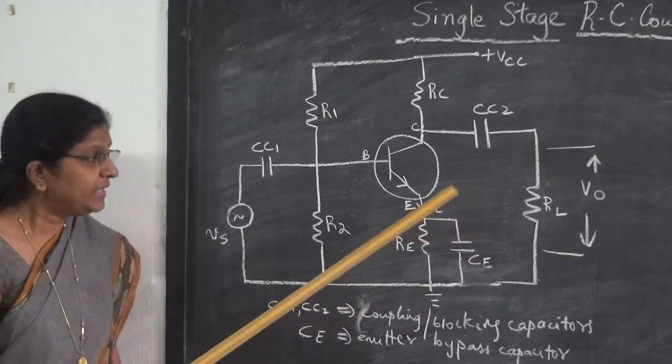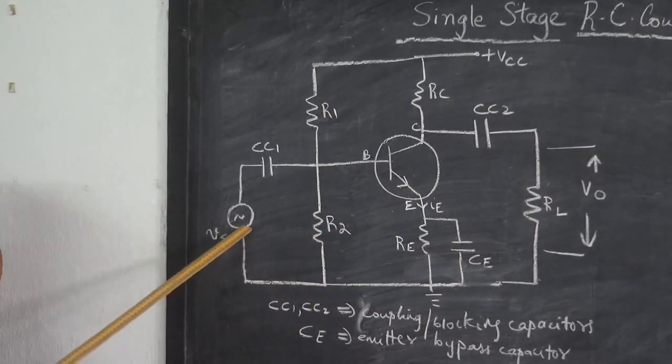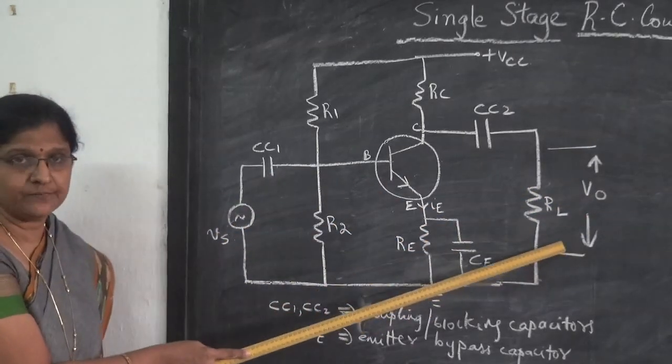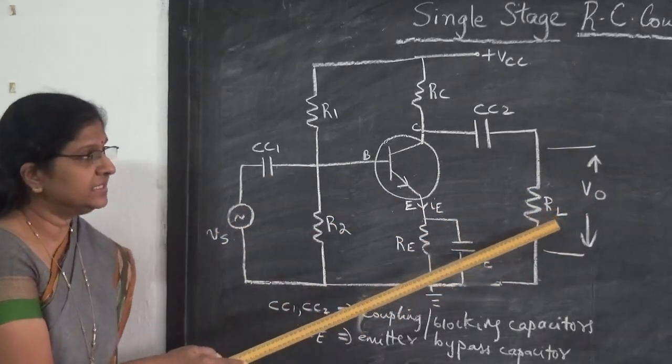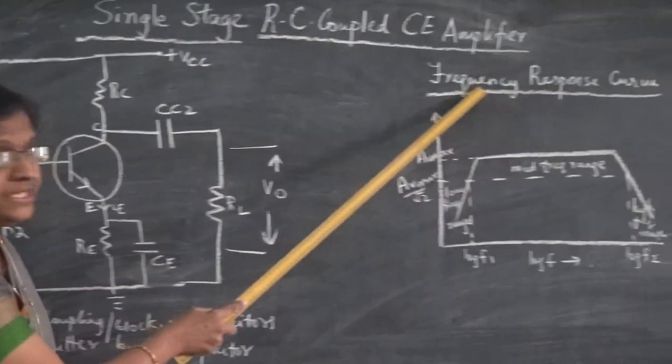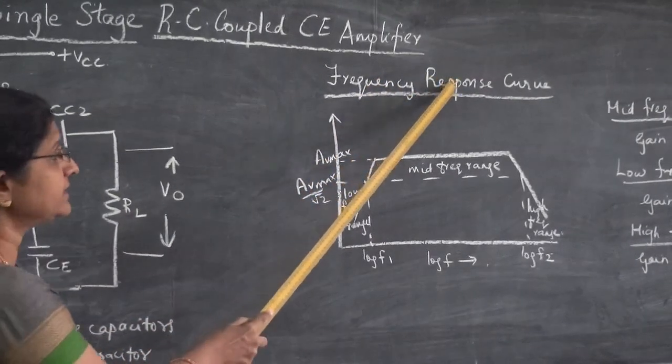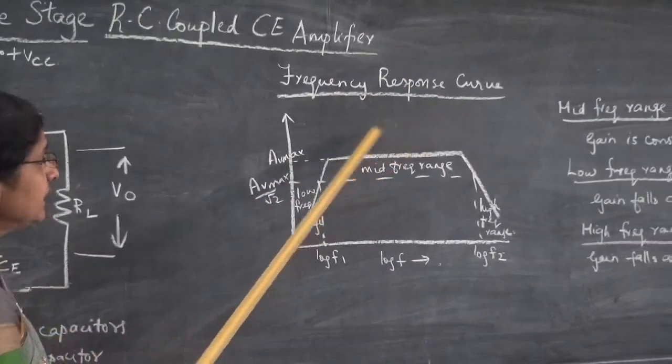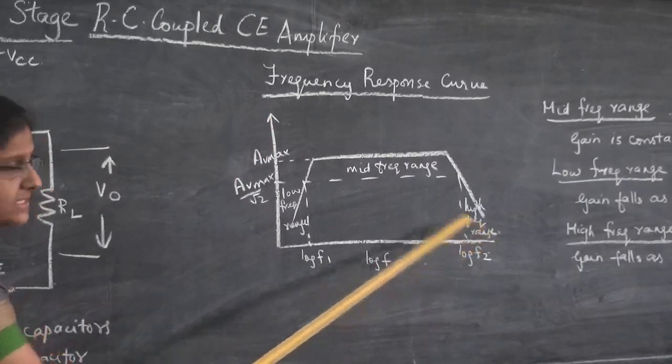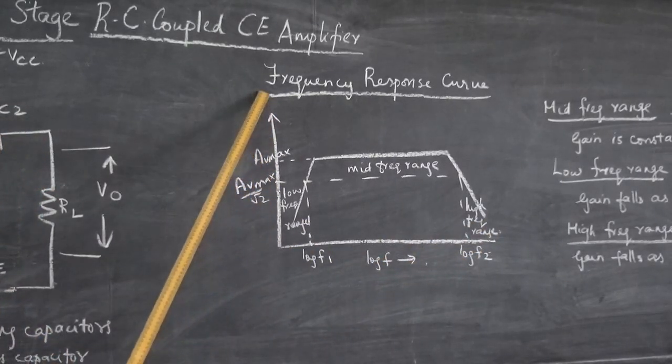Now we do this experiment for different values of frequency and observe the output voltage in each case. Now for any transistor, to check whether it is a good transistor or not, we have to study what is called the frequency response curve. So it is a graph plotted with frequency or log of frequency on the x-axis and voltage gain on the y-axis.